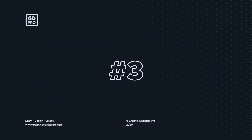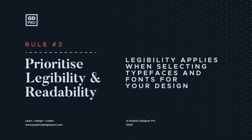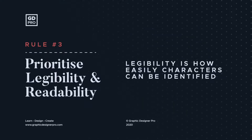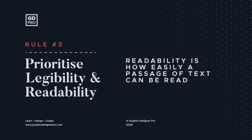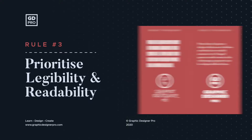Moving on to our last rule, that is to prioritise legibility and readability. Legibility is applicable to the design of the typefaces you use, as it refers to how easily the characters of any given text can be identified. Readability, on the other hand, is how easy it is for a user to read the text. We often see designs where the interesting style, positioning or scale of the text is prioritised over how well it actually reads, and this is one of the quickest ways to put off your audience.